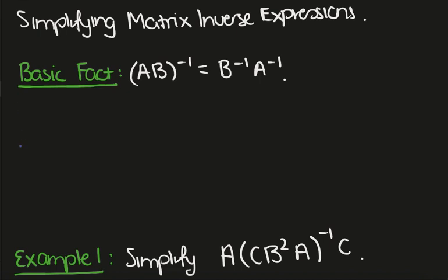In this video we want to look at simplifying matrix expressions which involve inverses. The basic fact that we're going to use throughout is that the inverse of the product of two invertible matrices A and B is given by switching the order and inverting them individually.